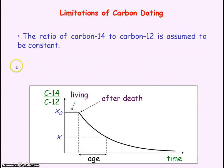One of the limitations of carbon dating is that the ratio of carbon-14 to carbon-12 is assumed to be constant. It may be changing over time with our burning of fossil fuels.